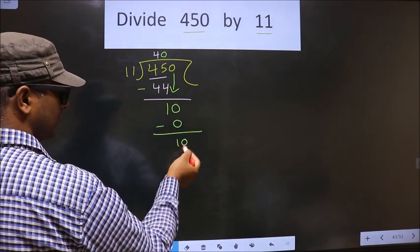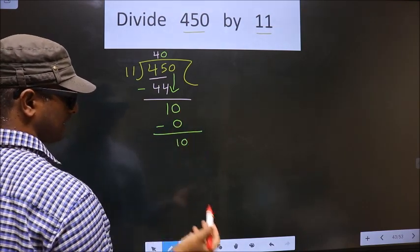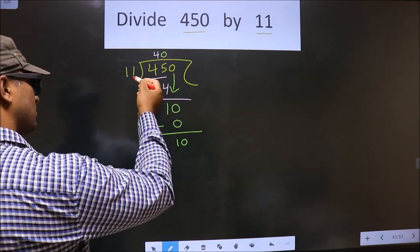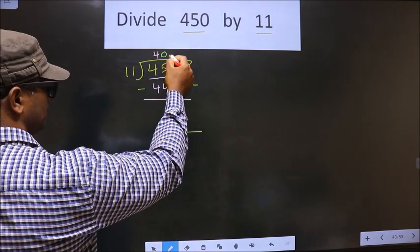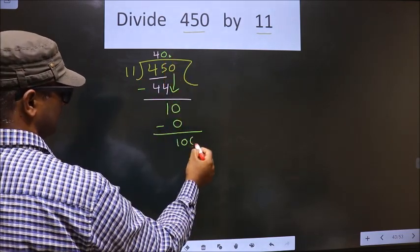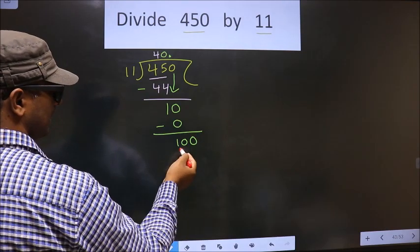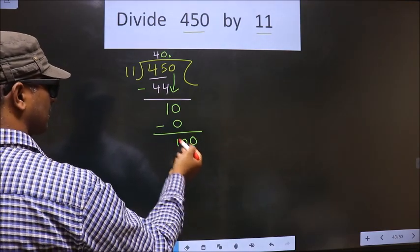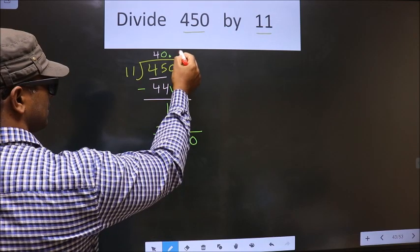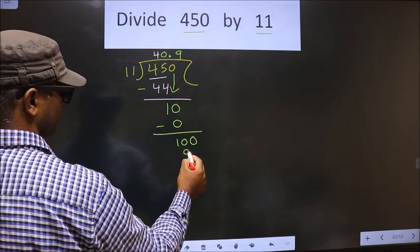Now here we did not bring any number down. Now 10 is smaller than 11, so we put a dot and take 0. Now here we have 100. A number close to 100 in the 11 times table is 11 times 9, which is 99.